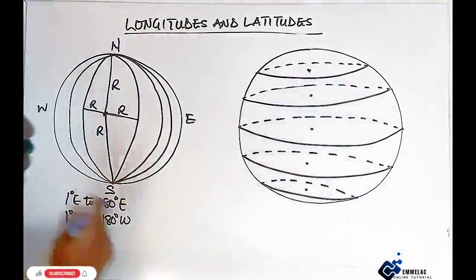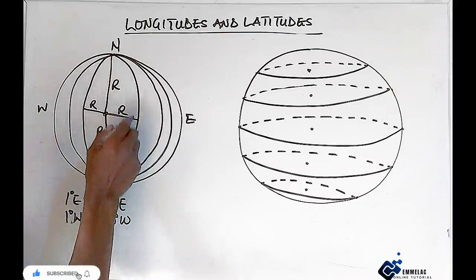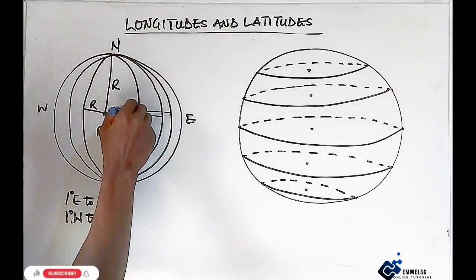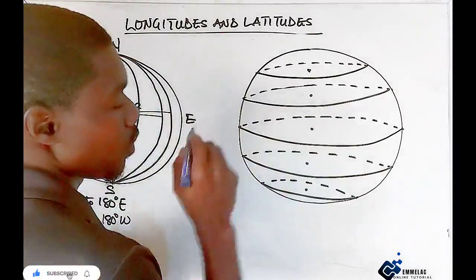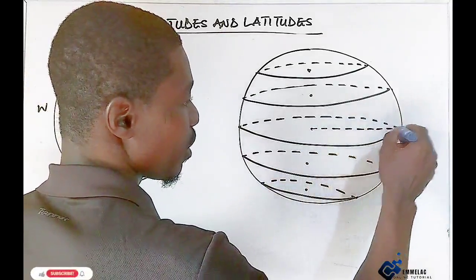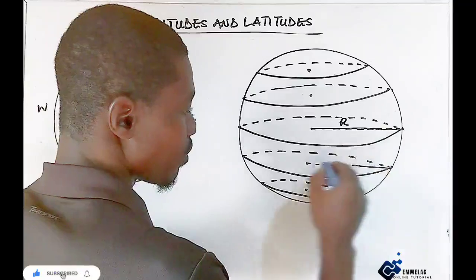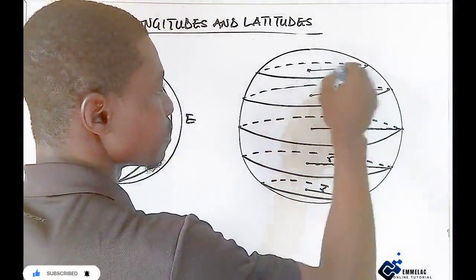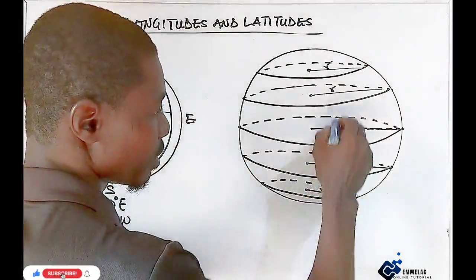Now there is a difference between latitude and longitude. For every line drawn from the center of longitude, it is a great radius. But for latitude, the only great radius we have is the one formed at the center of the Earth, which is the big R. The remaining ones are small radii, because they form small circles. Take note that the radii differ.